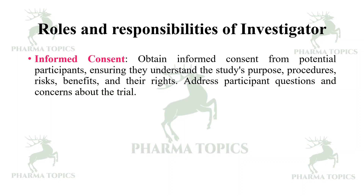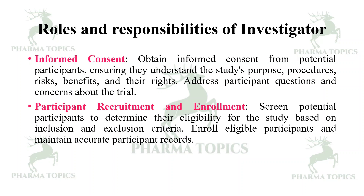Then, informed consent — the investigator has to obtain informed consent from potential participants, ensuring they understand the study's purpose, procedures, risks, benefits, and their rights. The investigator addresses participant questions and concerns about the trial, and screens potential participants to determine their eligibility based on inclusion and exclusion criteria.